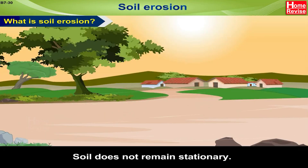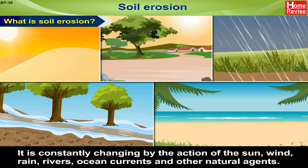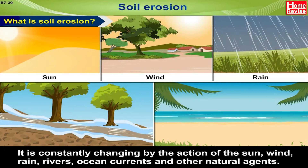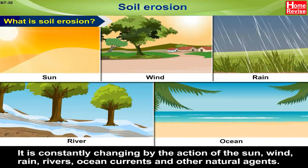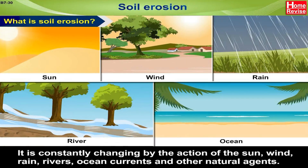Soil Erosion. What is soil erosion? Soil does not remain stationary. It is constantly changing by the action of the sun, wind, rain, rivers, ocean currents and other natural agents.